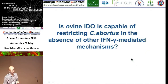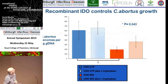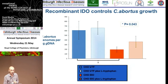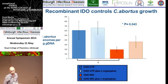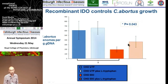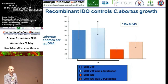We then asked whether IDO alone is capable of restricting chlamydia in the absence of other interferon gamma-induced mechanisms. We used Chinese hamster ovary cells transfected to express recombinant IDO — so there's no interferon gamma and none of those other pathways are active. We can see restriction of Chlamydia abortus growth, and we can partially rescue this with exogenous tryptophan. We haven't yet done these experiments with C. pecorum, but that will give us more of a handle on the IDO and tryptophan pathway.